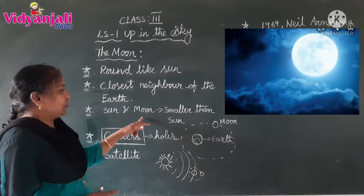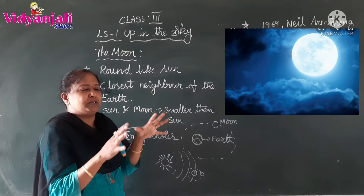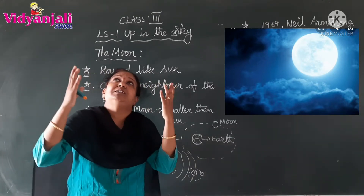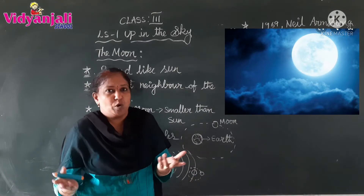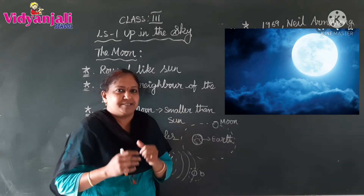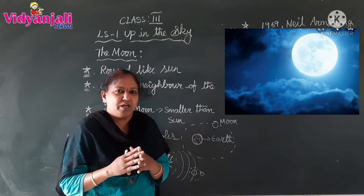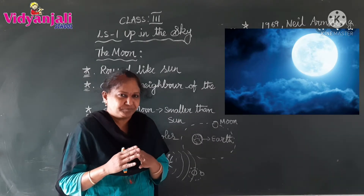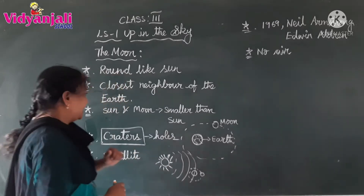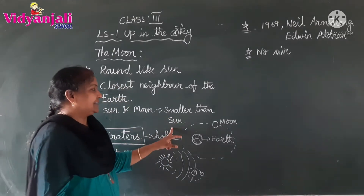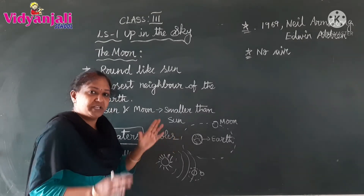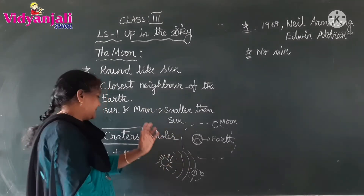The sun and the moon appear to be the same size from the earth — when we watch in the night sky or in the morning. Both are looking the same size, but no, it is not like that. Both are different in size. The moon is many times smaller than the sun.